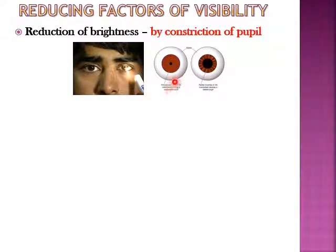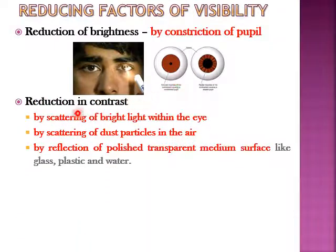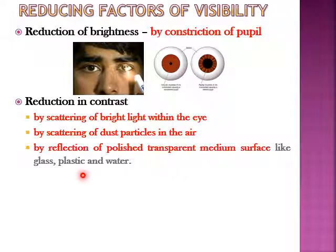Second is the reduction in contrast, either due to scattering of bright light within the eye, or scattering of dust particles present in the air, or by reflection from polished transparent surfaces like glass, plastic, and water. For example, a driver driving a car in rainy conditions — the water molecules present will result in multiple scattering of light beams, so the vision is reduced because of multiple scattering.